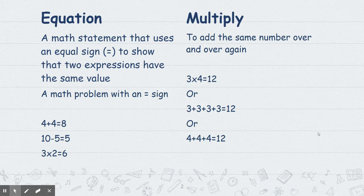So examples are 4 plus 4 equals 8, 10 minus 5 equals 5, and 3 times 2 equals 6. They all have an equal sign. On the left, 4 plus 4 is the same as 8, so it has to have the same value on each side of the equal sign to be an equation.